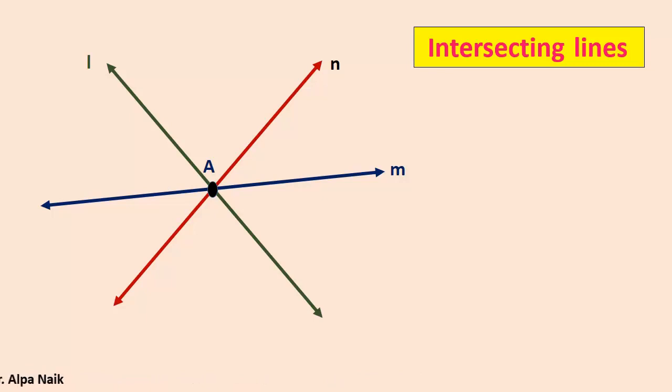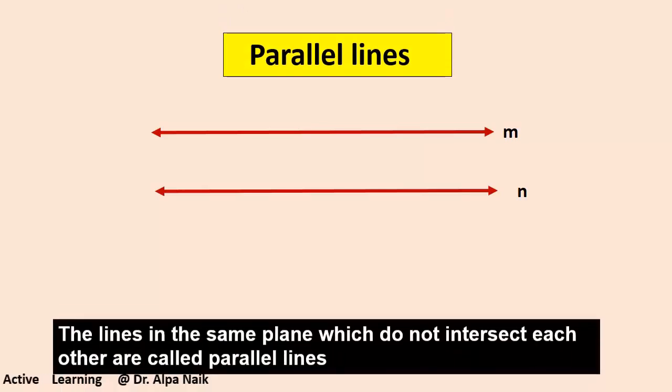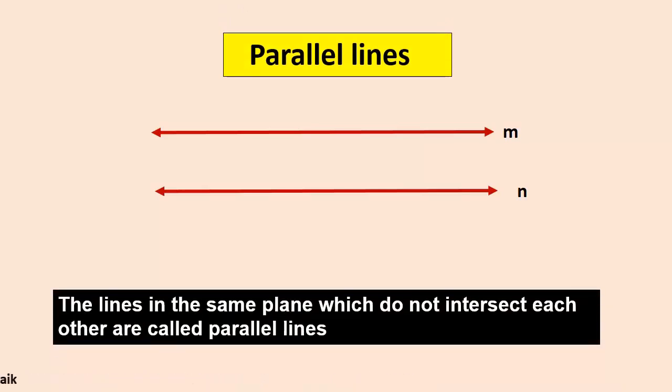Now look at another example. Again we have line M and line N. These two lines are not intersecting and they are at equal distance or the same distance. Such lines are known as parallel lines. The lines in the same plane which do not intersect each other are called parallel lines. Symbolically we write line M parallel to line N.